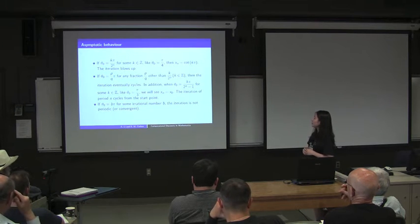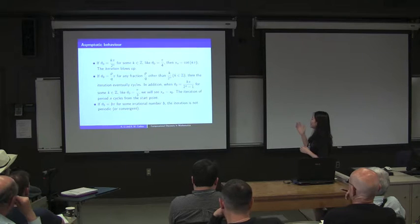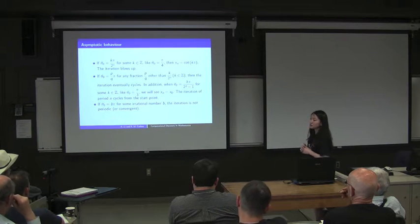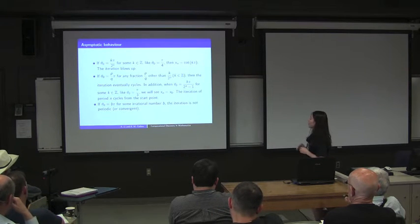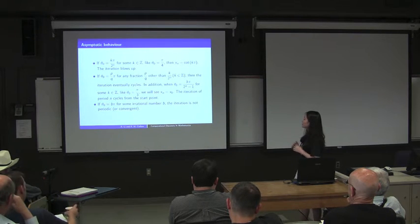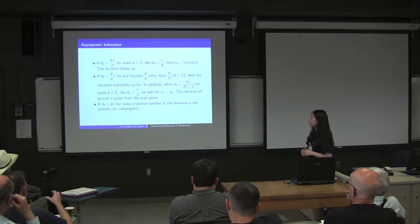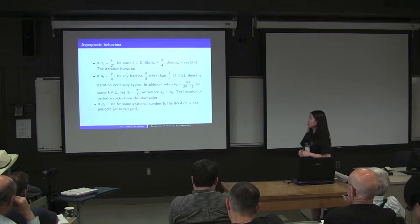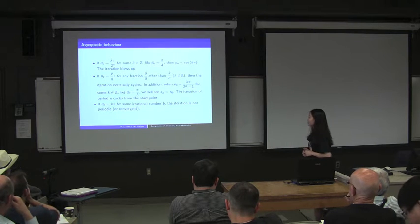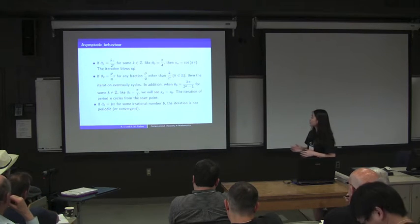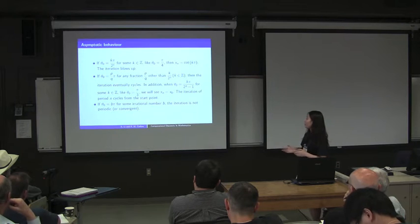In addition, when θ₀ can be written as an integer multiple of π over 2ⁿ⁻¹, we see that X₀ equals Xn, meaning the iteration is periodic with period n from the starting point. The third case is when the initial angle is an irrational multiple of π — in this case the iteration is neither periodic nor convergent.